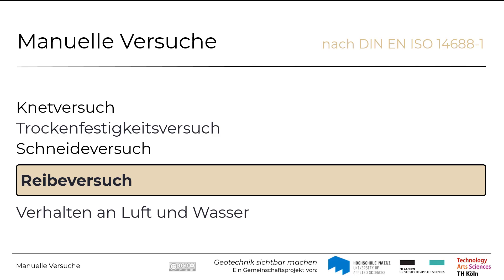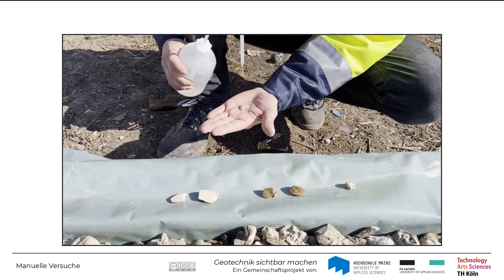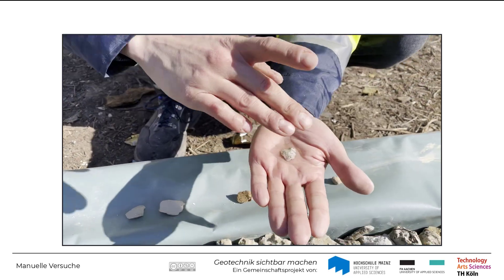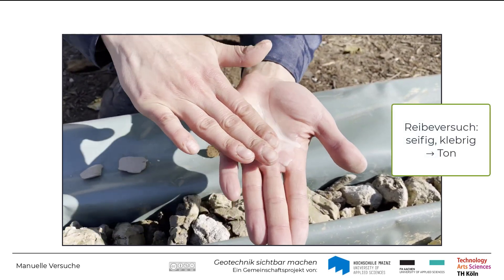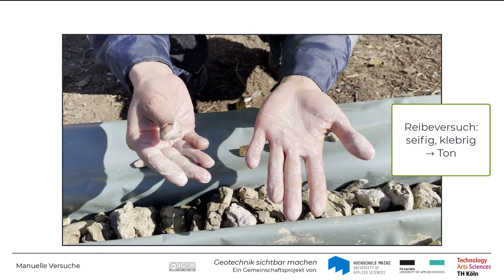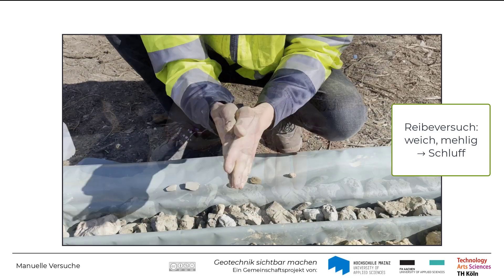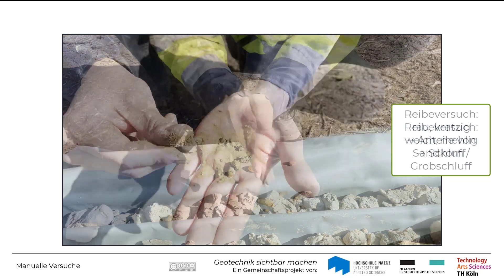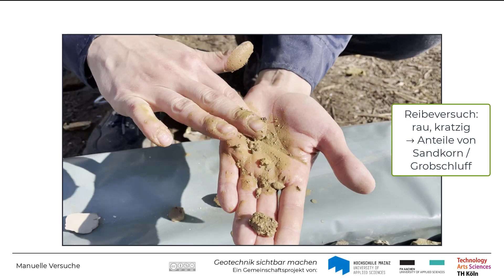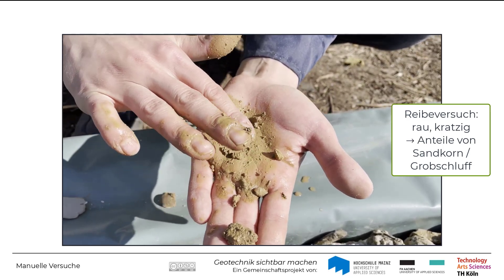Im Reibeversuch wird der Anteil an Sand, Schluff und Ton abgeschätzt. Hierzu wird die Bodenprobe zwischen den Fingern oder auf der Handfläche gerieben, gegebenenfalls unter Zugabe von Wasser. Wenn sich der Boden seifig anfühlt und an den Fingern kleben bleibt, handelt es sich um einen Ton – diesen kann man oft nur mit Wasser oder einer Bürste von den Händen abwaschen. Wenn sich der Boden weich und mehlig anfühlt, handelt es sich meist um einen Schluff; dieser lässt sich durch Pusten oder Aneinanderklatschen der Handflächen leicht entfernen. Wenn sich der Boden rau und kratzig anfühlt und die Probe knirscht, enthält die Probe Sandkorn oder Grobschluff. Sandkorn ist mit bloßem Auge sichtbar, Grobschluff im Gegensatz dazu nicht.